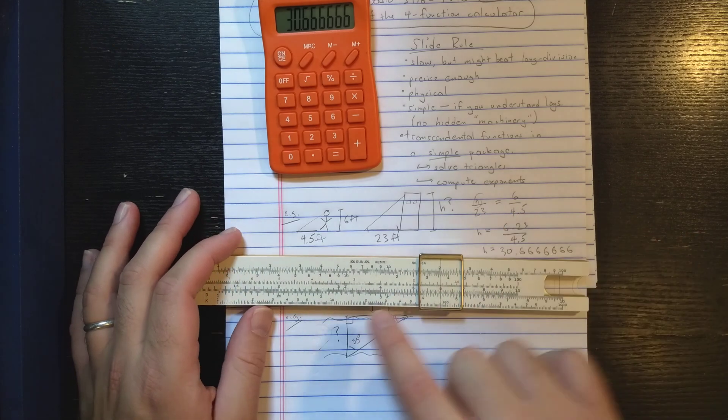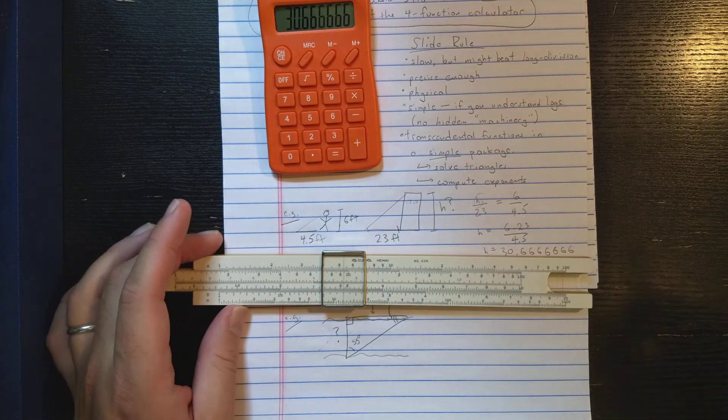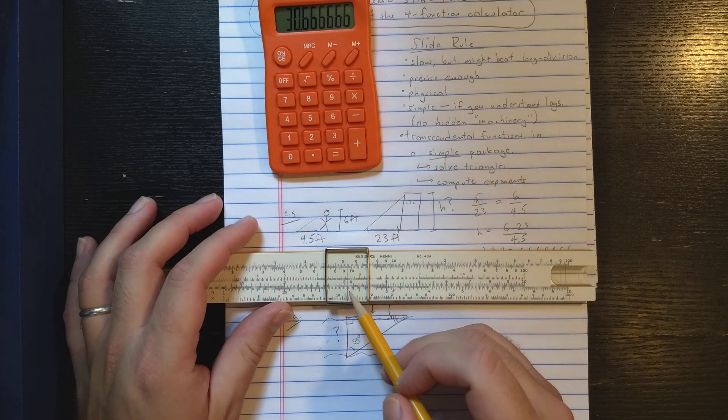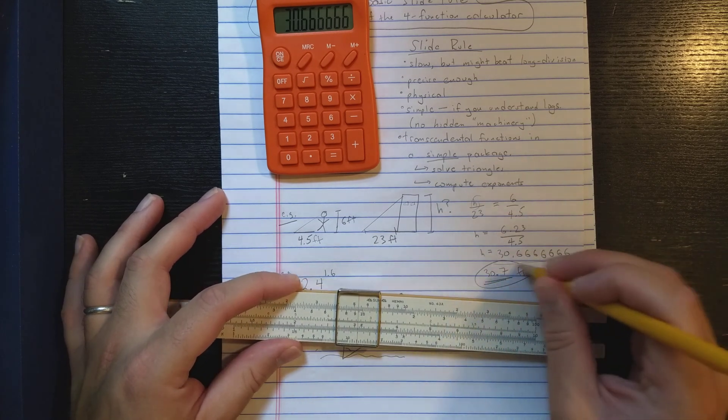I can solve a proportion like this physically on the slide rule. Now I'm going to find the 23, which is down here. Now remember the slide rule doesn't put your decimal point for you. So it looks like 3.07 or so there on the slide rule, 30.7.